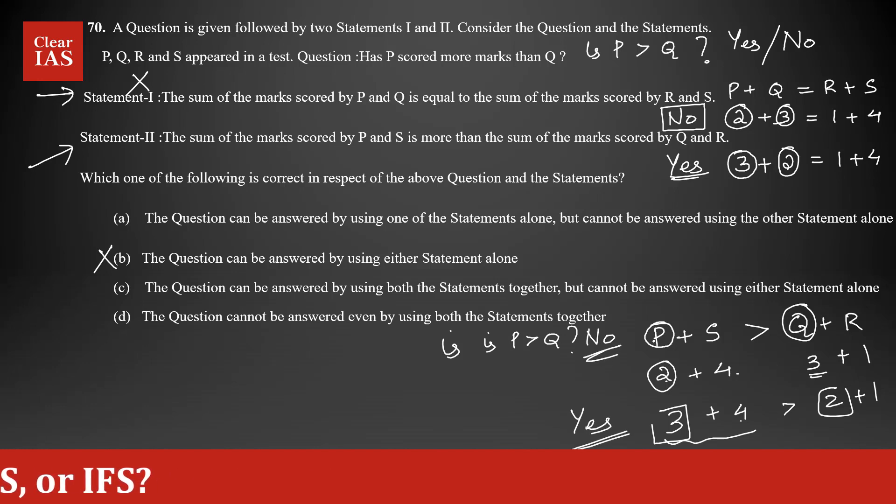Always keep in mind if you are picking numbers, the first answer you are going to get is going to be either yes or no. But always try to get an opposite answer. That's how you could prove that the statement is not sufficient. You should try. I am not saying always you will be able to prove that both answers are possible. You should always try. So here statement 2 alone also it's not sufficient because you are getting a no as well as a yes.